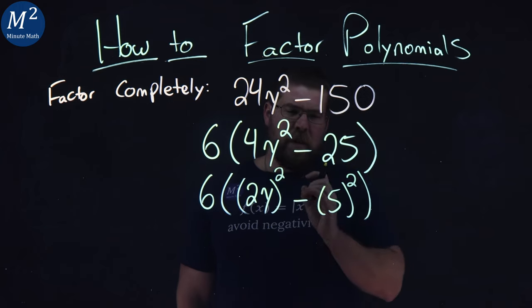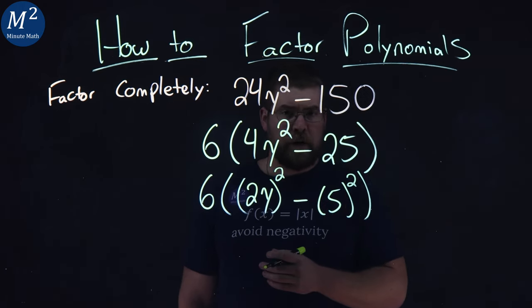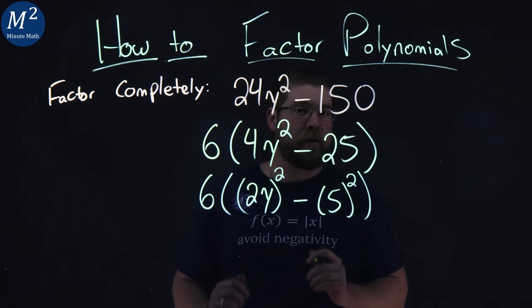Now, this is actually a special case, the difference of squares that we've talked about. We have 2y squared minus 5 all squared, and we need to factor all that.